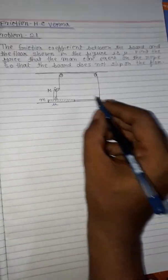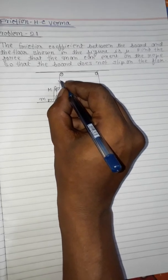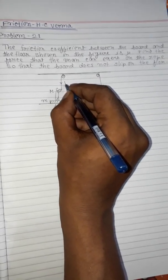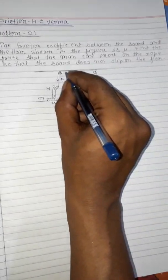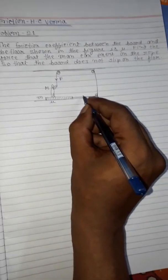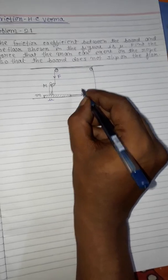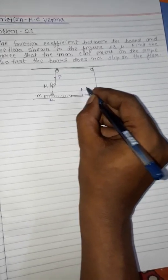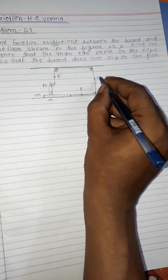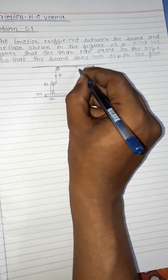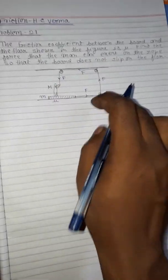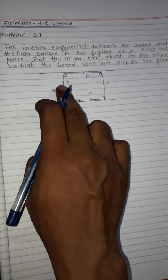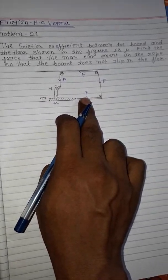To solve it, let the man exert a force F. This force goes through the entire rope. As the rope has no mass, the tension throughout is F.